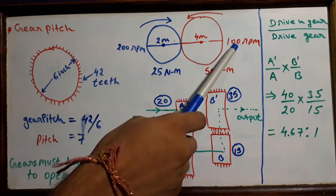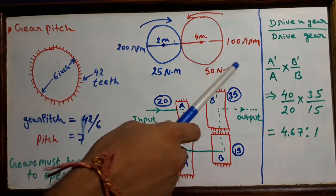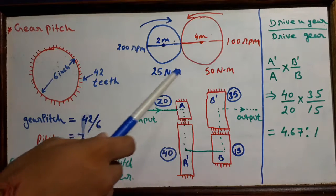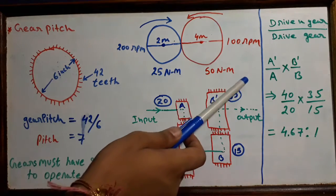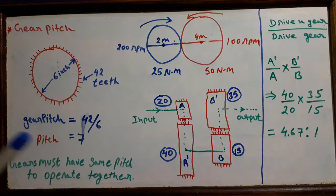The driven gear is generating more torque, twice the torque of the drive gear. There is variation in RPM and torque because there is a gear ratio between these two operating gears.